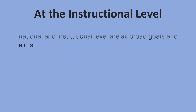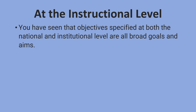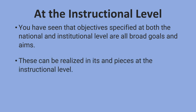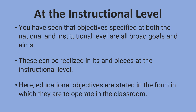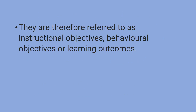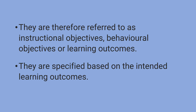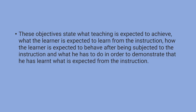At the instructional level, objectives specified at both the national and institutional level are all broad goals and aims. These can be realized in bits and pieces at the instructional level. Here, educational objectives are stated in the form in which they are to operate in the classroom. They are referred to as instructional objectives, behavioral objectives, or learning outcomes, and are specified based on the intended learning outcomes. These objectives state what teaching is expected to achieve, what the learner is expected to learn, how the learner is expected to behave after instruction, and what he has to do to demonstrate that he has learnt.